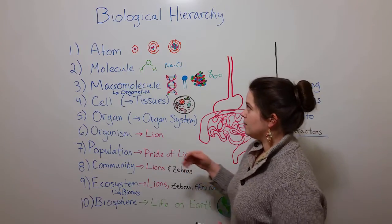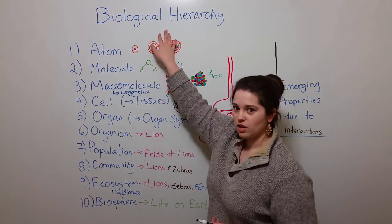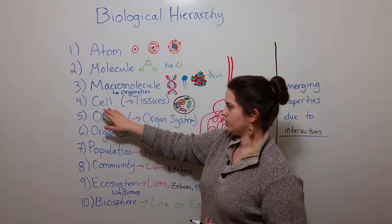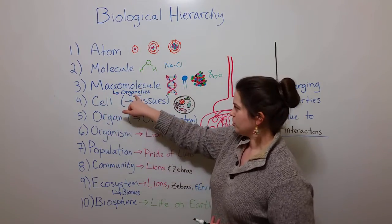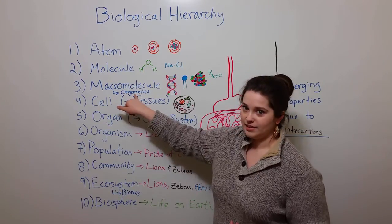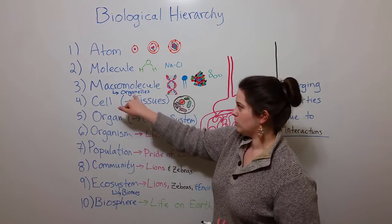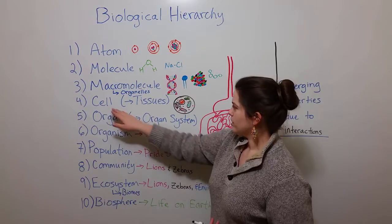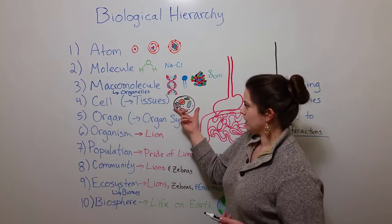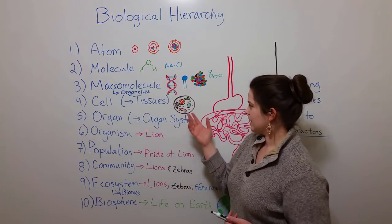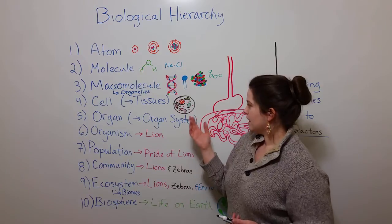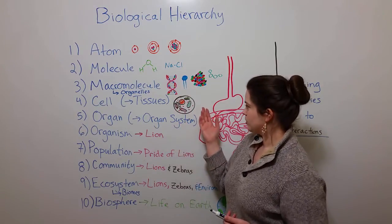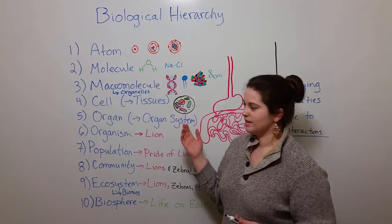Now, some lists talking about biological hierarchy jump from macromolecules to cells. Others include organelles as a separate level in the biological hierarchy. Of course, we know that cells are made of organelles, things like the nucleus, the endoplasmic reticulum, lysosome, peroxisome, the Golgi, mitochondria, chloroplasts, ribosomes, etc.